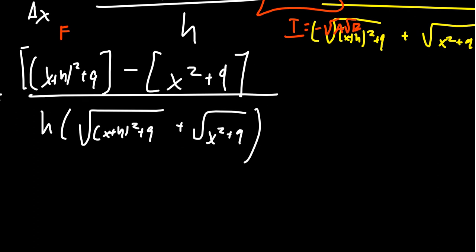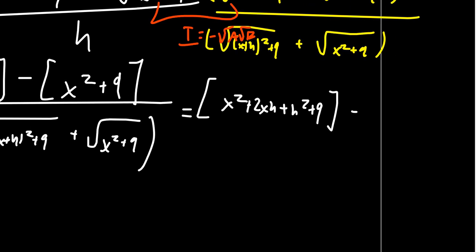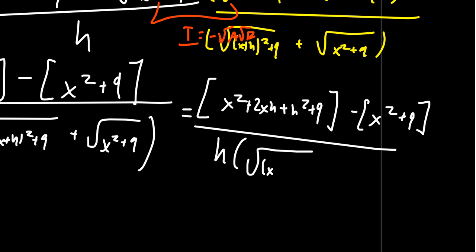Take the x plus h squared, foil that out. We're going to get x squared plus 2xh plus h squared plus 9. We then subtract from that the x squared plus 9, and then copy down the denominator: h times the square root of x plus h squared plus 9 plus the square root of x squared plus 9. The denominator is just going for a ride right now.